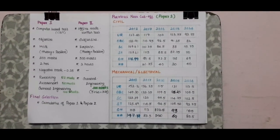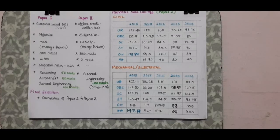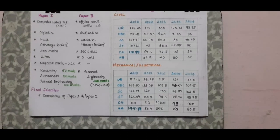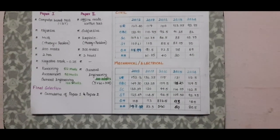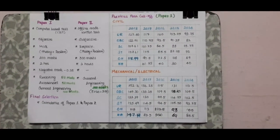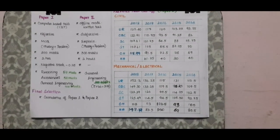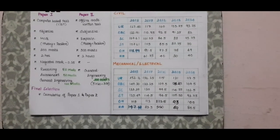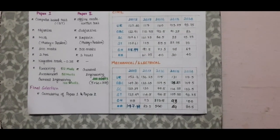We will do a separate analysis for mechanical and electrical, covering categories including OBC, SC/ST, and OH. Here we break down the process within the year.